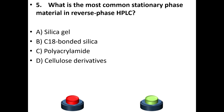Fifth question: What is the most common stationary phase material in reverse phase HPLC? A. Silica gel. B. C18 bonded silica. C. Polyacrylamide. D. Cellulose derivatives. Your answer is option B: C18 — Carbon-18 bonded silica.